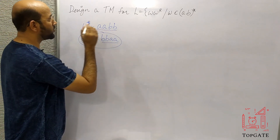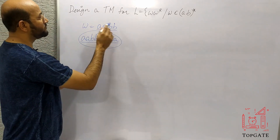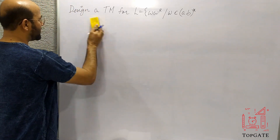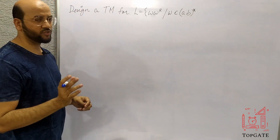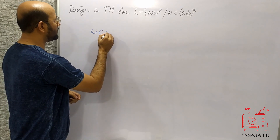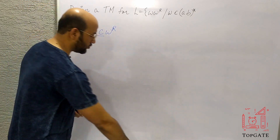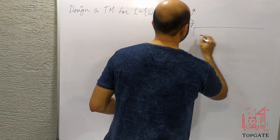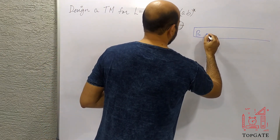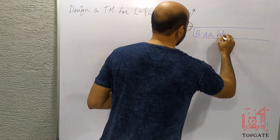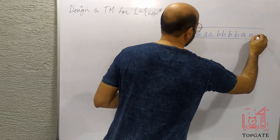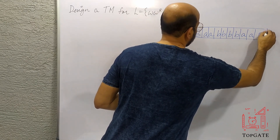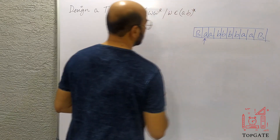These kinds of strings are possible in this language — any combination of A and B in the first W, and then the exact reverse in the second part. Now let's design the Turing machine for this problem. It is a pretty simple one; we discussed a similar problem in the previous video with WCW^R. Let's take our input tape — I'll use the same example string: A, A, B, B, B, B, A, A followed by a blank, divided into cells, with the read-write head on the first cell.